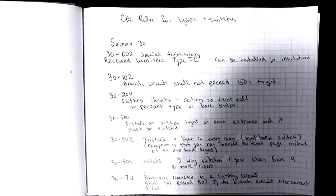30-204, when we're installing a light in a closet, we have to be really careful with the position of that light. We're allowed to put them on the ceiling, often they're on the front wall just above the door. You're not allowed to use a pendant type or have bare bulbs. You're just worried about that heat from the incandescent bulbs getting too close to your clothes and causing a fire.